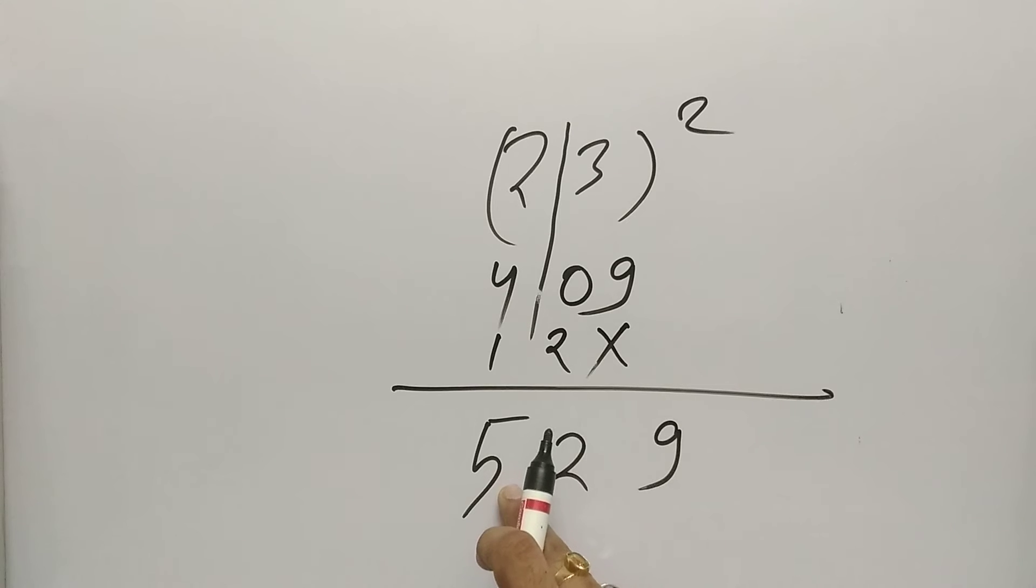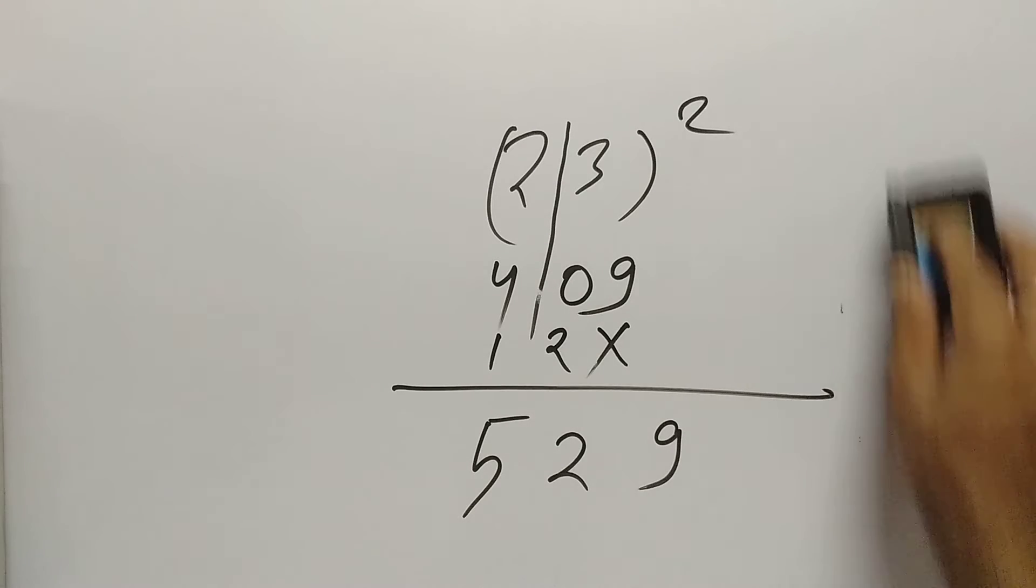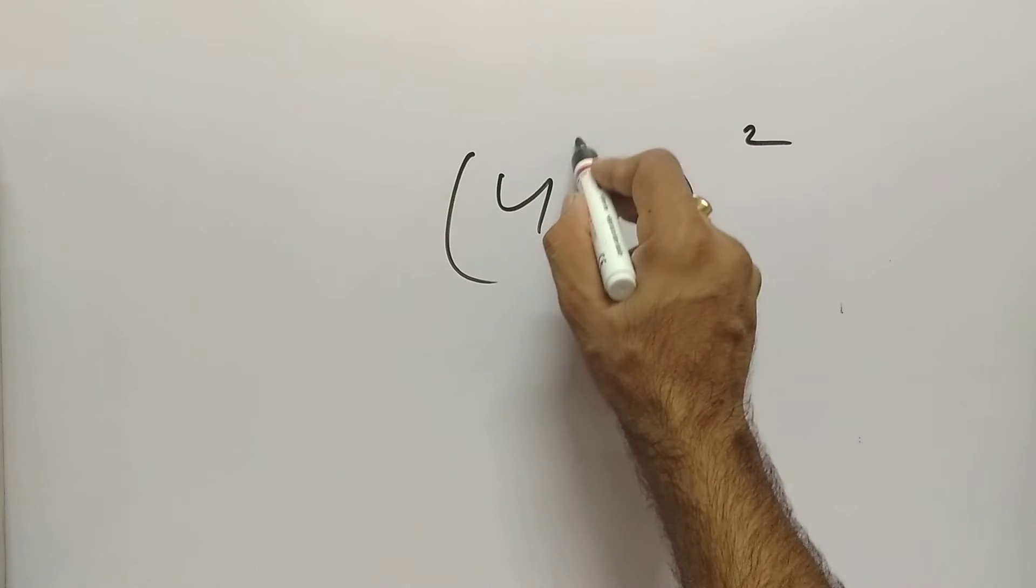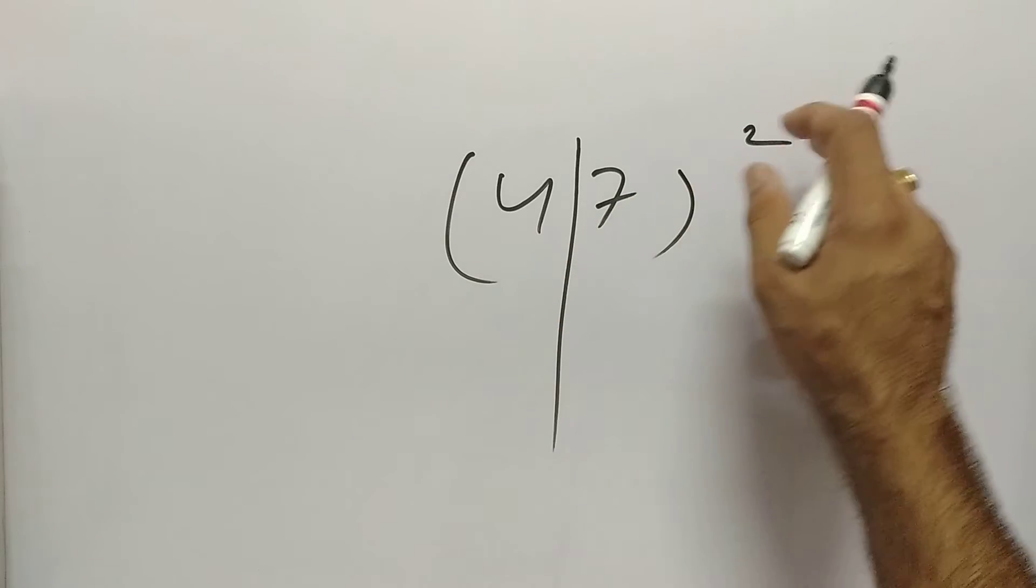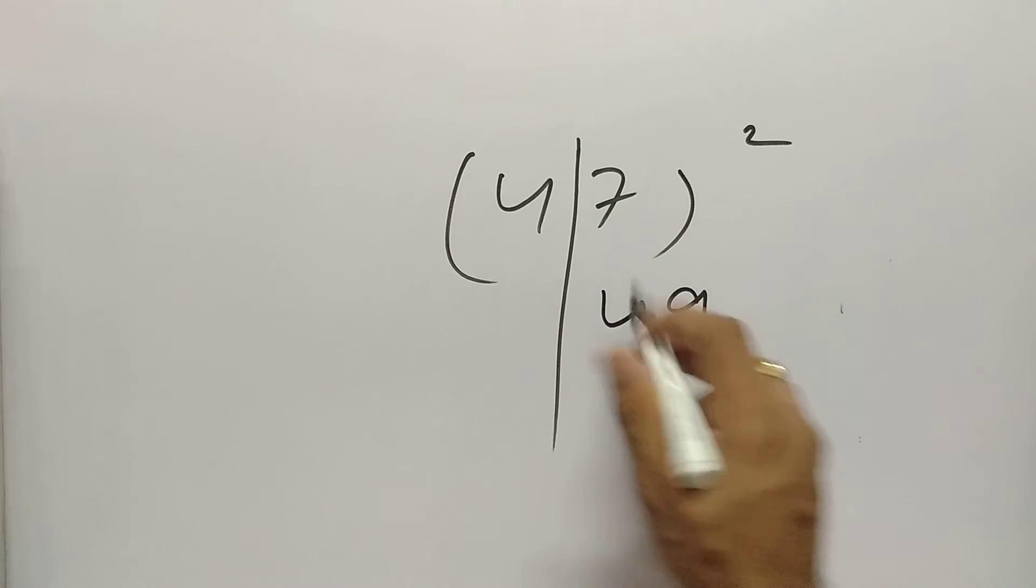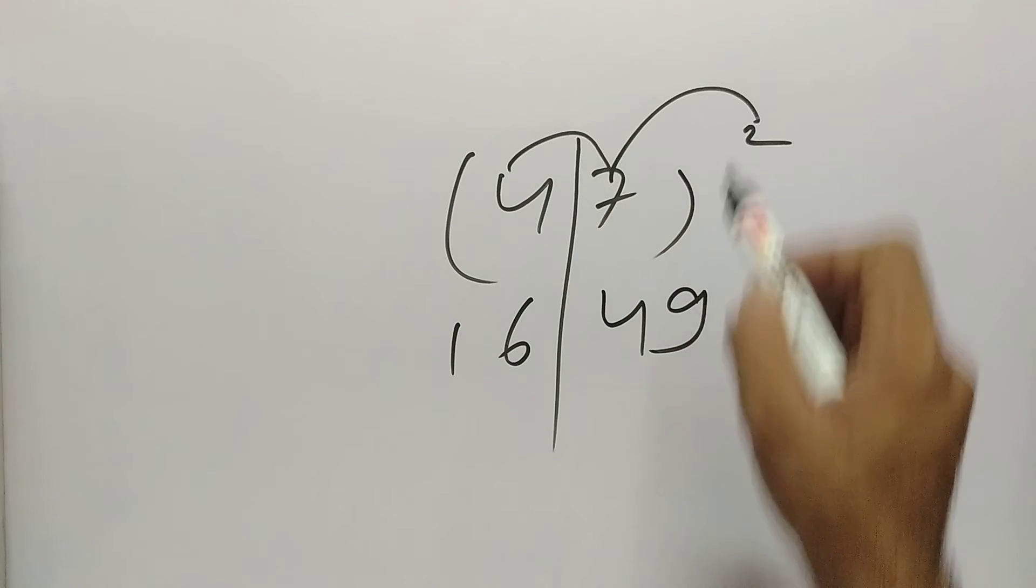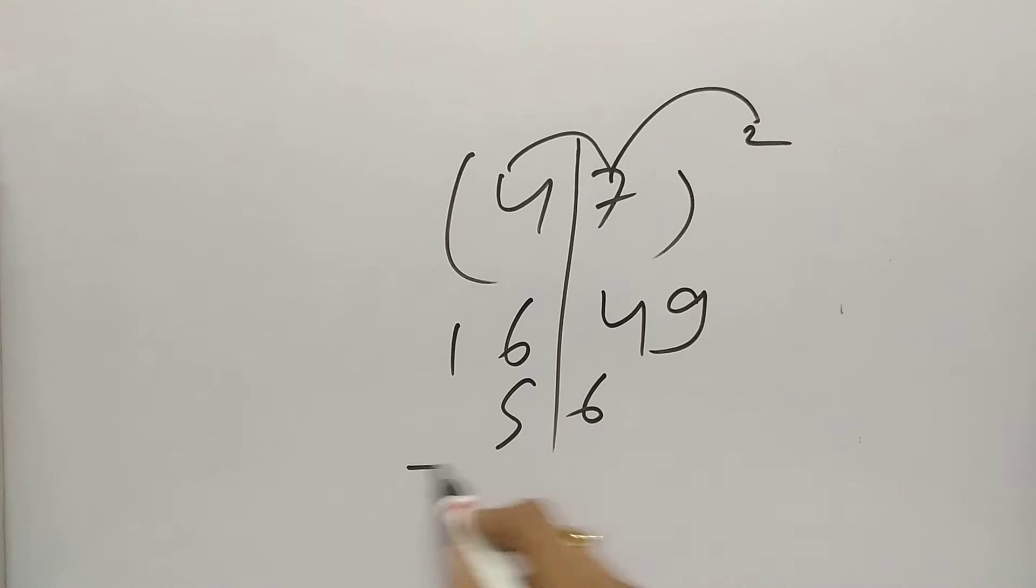Let's take another number. Suppose the number is 47 square. What we are going to do? Make the diagonal. 7 times 7 square is 49. 4 square is 16. 7 times 4 is 28, 28 times 2 is 56. After that we will add 0, 11, 12, 2, 2, 0, 9, 2209.